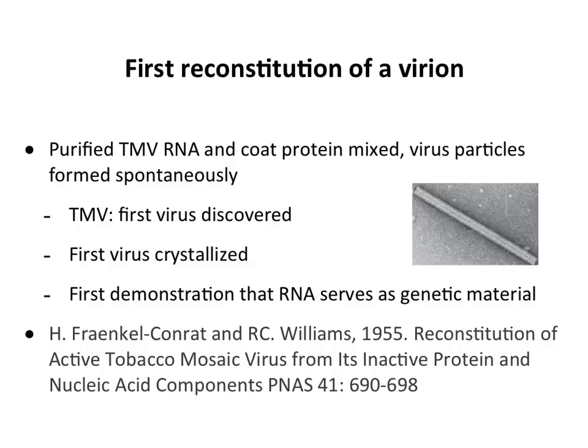The first reconstitution of a virus particle from its components was done with tobacco mosaic virus. In 1955, investigators purified the RNA and the coat protein separately. This virion is a single rod-shaped particle made up of a single coat protein repeated many times. When they mixed the RNA and coat protein, they spontaneously assembled to form the virion, and that assembled virus was infectious. This was the beginning of our understanding that viral components self-assemble — you can take them apart and put them back together again.